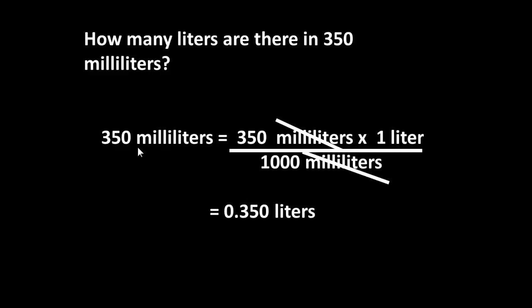So how many liters are there in 350 millilitres? Well, to do that, we multiply 350 millilitres by 1 liter and divide by 1000 millilitres. Again, the units, the millilitres will cancel out to leave you with liters.